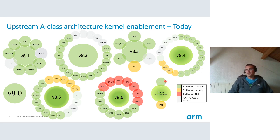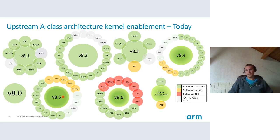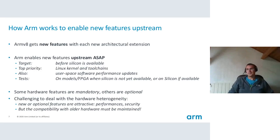Here you can also see different colors with different meanings about kernel enablement in upstream. Most of the features are enabled or nearly enabled until 8.5, whereas as I told you we are just about to get 8.3 hardware. This is because ARM tries to get new features upstream as soon as possible, even before silicon is available. That way, when you get your hardware, you're pretty sure to have good software support.